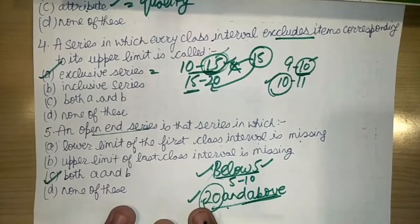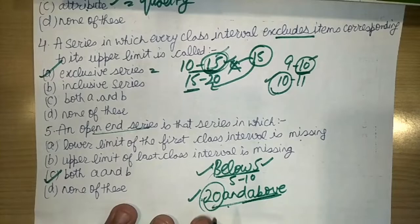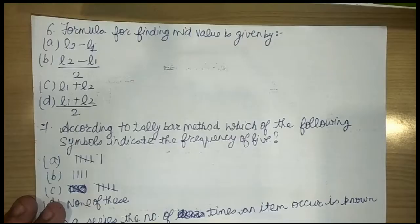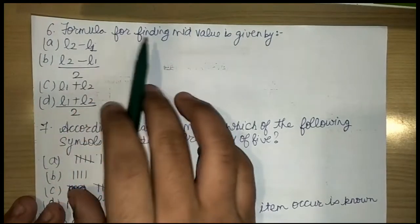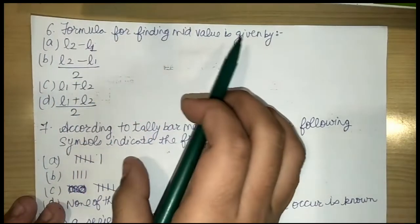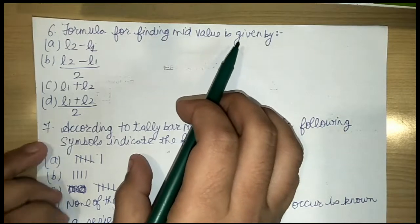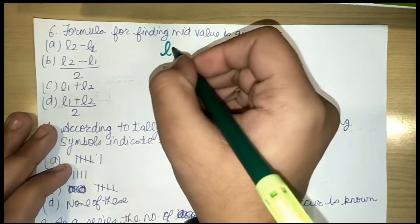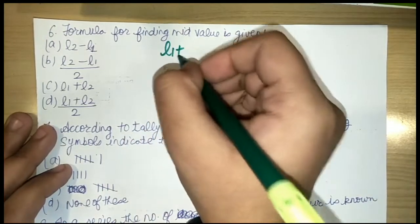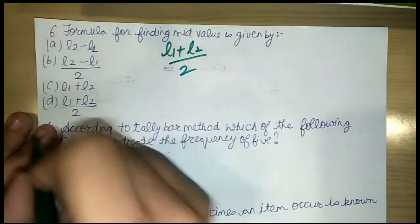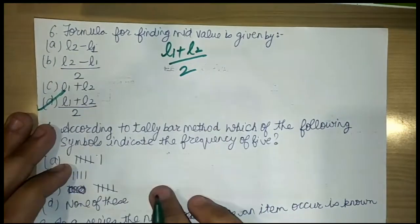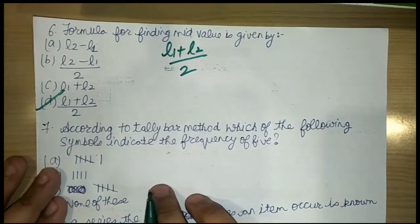The next question is: what is the formula for finding the mid value? The mid value formula is: lower limit plus upper limit, divided by 2. Option D is correct.